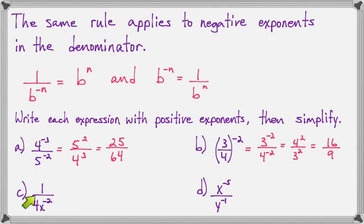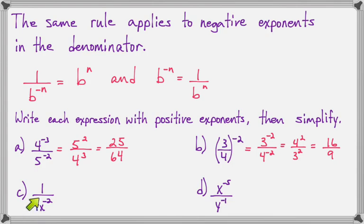Pay special attention to part C — this is where a lot of people mess up. I have 1 over 4x to the negative 2. I want you to think about what part of this expression has an exponent of negative 2. The answer is only the x. The exponent on the 4 is not negative 2; the exponent on the 4 is unwritten, and it is a 1. So if I want to make the x have a positive exponent, I move only the x to the top. The 4 stays in the bottom because it is not part of this negative 2 exponent base.